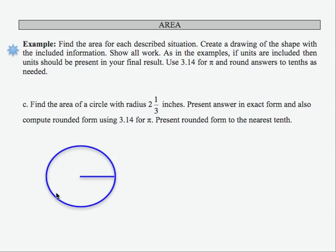So here's a drawing of the situation. I have a circle and there's my radius line. And I'm going to write in here the radius as 2 and 1/3 inches.